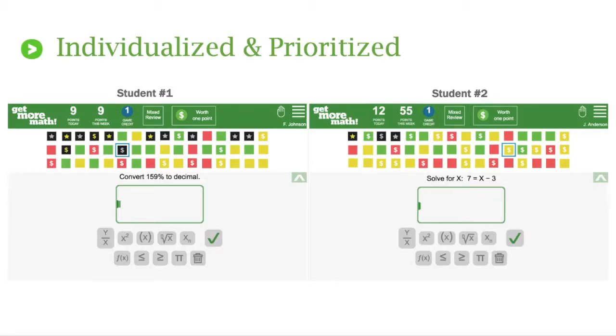So students working in mixed review in the same class will have the same number of skills like these two students do, but their dollar signs will be in different places to prioritize the practice for each student. Notice that the colors of the squares are different for each student, based on each student's mastery of the concepts, and remember those problems are dynamically generated, so students don't have the same problems as one another.